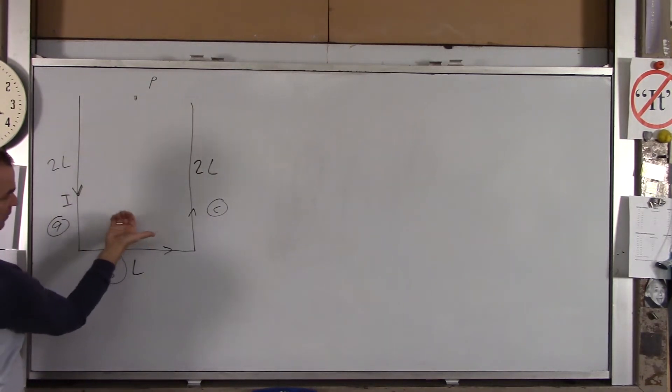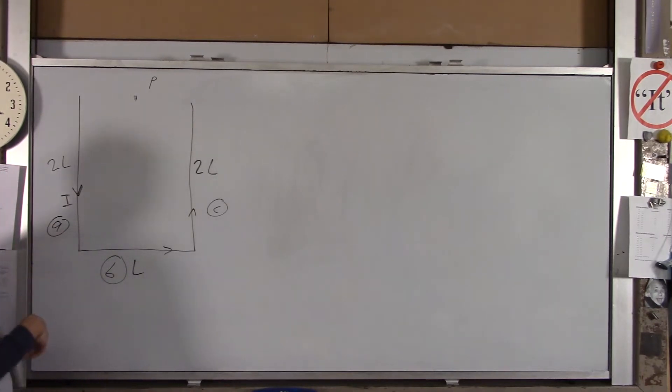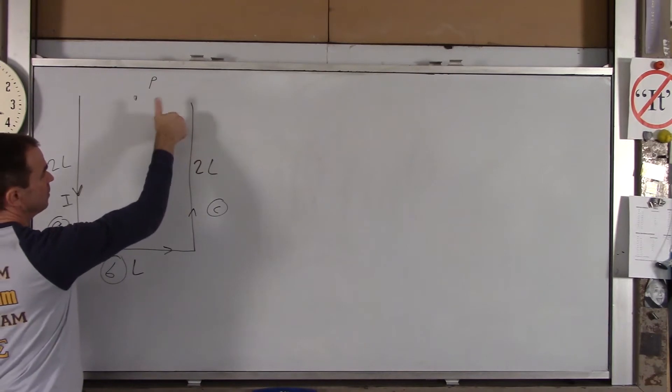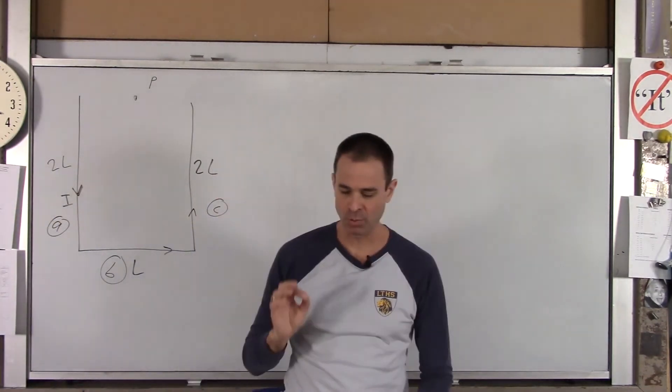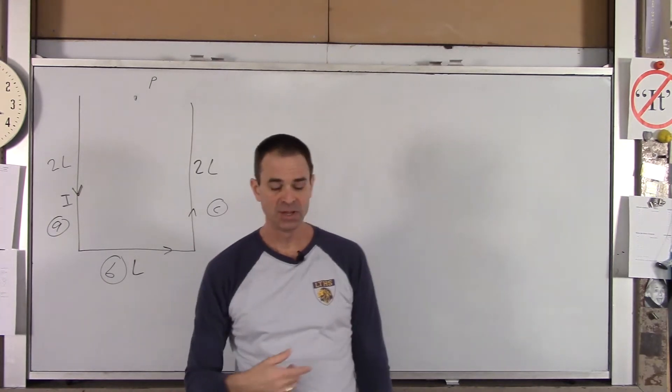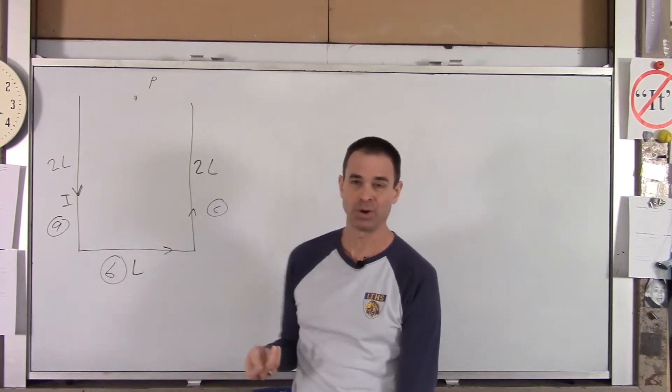Wire B, if I do my right-hand rule, also makes a field pointing out of the page there. And wire C makes a field pointing out of the page. So since all three wires make fields that point, a magnetic field that points out of the page, we're just going to simply add the three fields together. And that'll be our net magnetic field at point P.